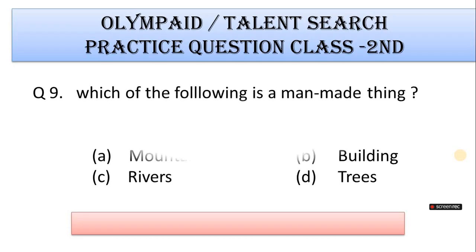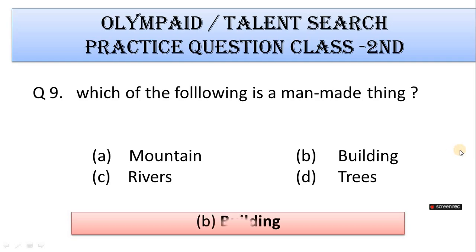Number 9: Which of the following is a man-made thing? A. Mountain, B. Buildings, C. Rivers, D. Tree. Correct answer is Option B. Buildings.